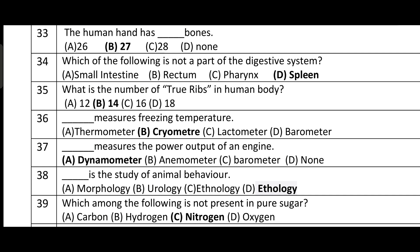Question number thirty-seven: what measures the power output of an engine? Option A is correct. Question number thirty-eight: what is the study of animal behavior? The answer is ethology. Ethology is the study of animal behavior. Option D is correct.